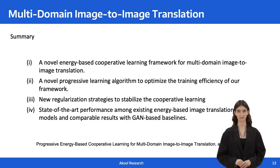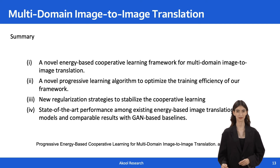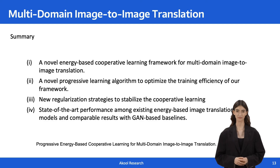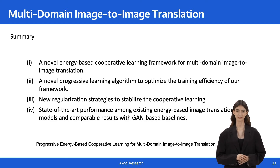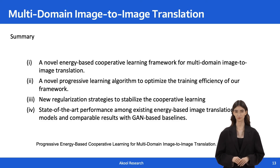We briefly summarize the paper. This paper proposes a novel energy-based cooperative learning framework for multi-domain image-to-image translation. We build a single multi-head energy-based model to represent probability distributions of multiple domains, and train it with a translator, a style encoder, and a style generator using a cooperative manner. The paper presents a novel progressive learning algorithm to optimize training efficiency, and proposes regularization strategies to stabilize cooperative learning — including an energy-based regularization loss for the translator and an L2 regularization loss for limiting the magnitude of energy values of the descriptor. The method obtained state-of-the-art performance among existing energy-based image translation models and comparable results with GAN-based baselines. For more details, please refer to the paper. Thanks for listening.